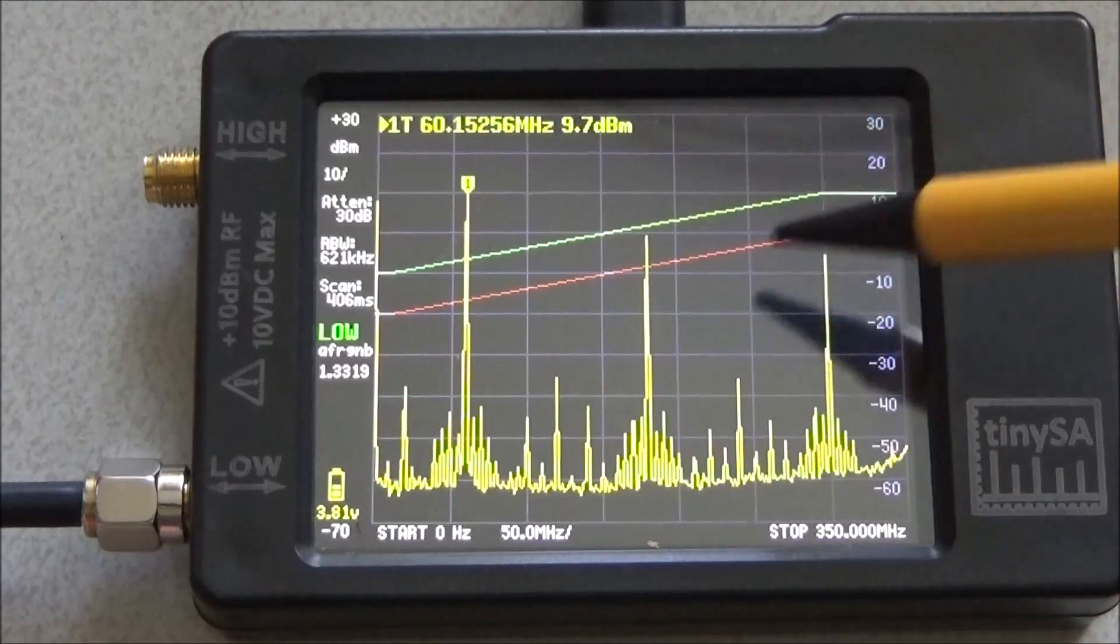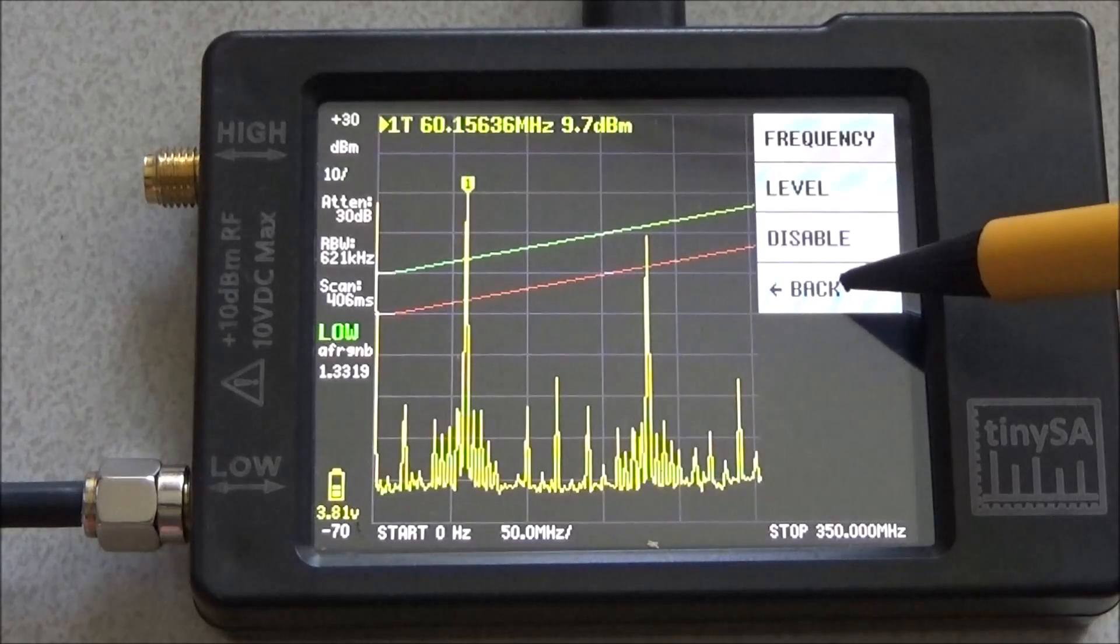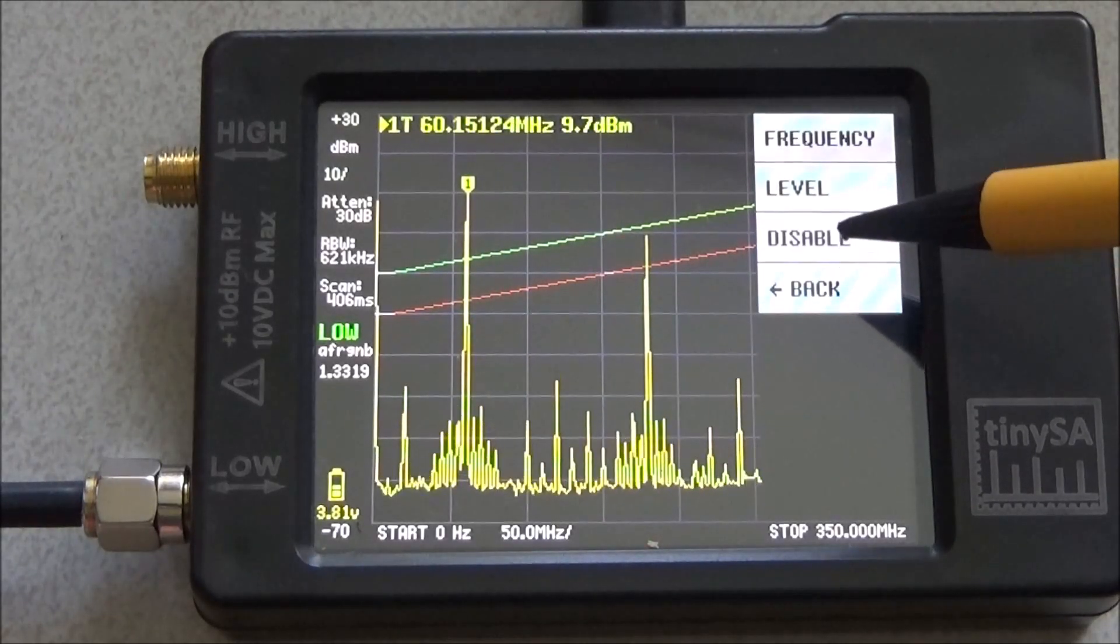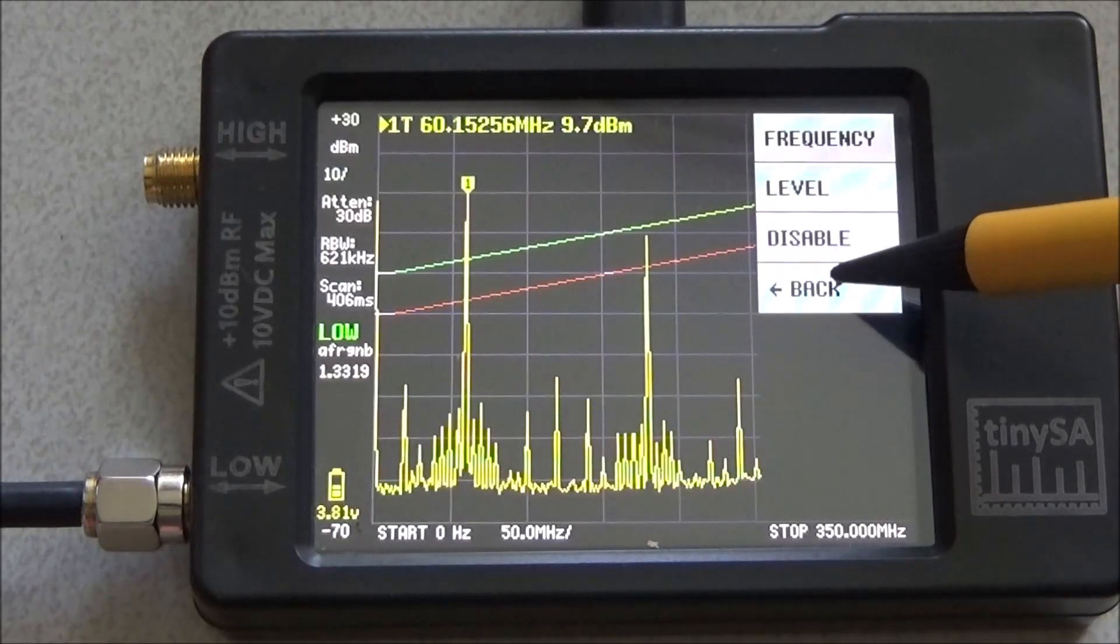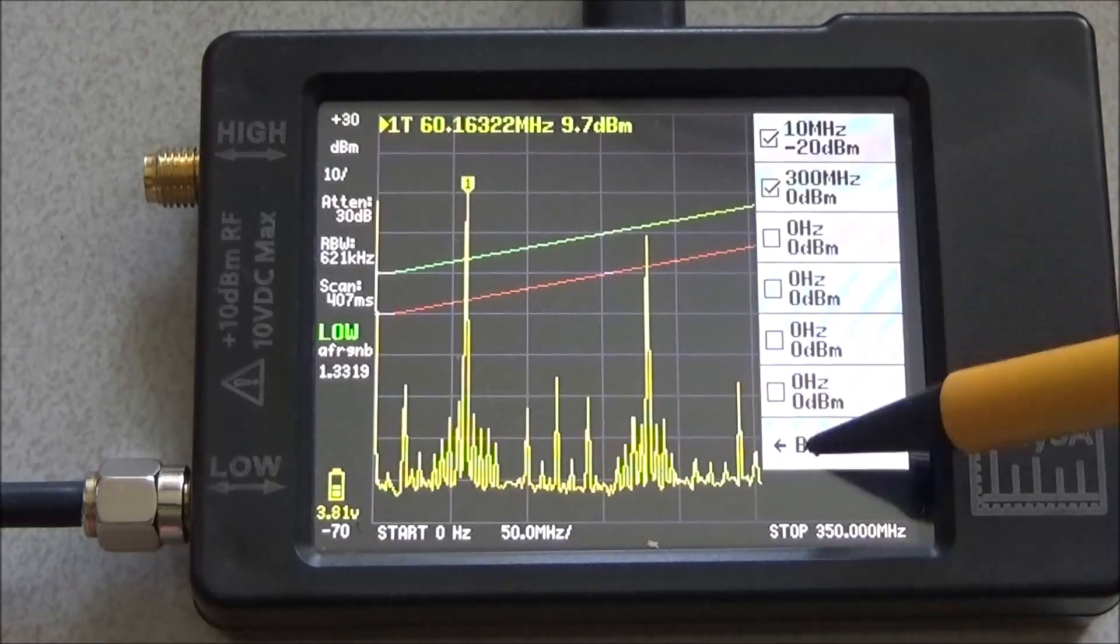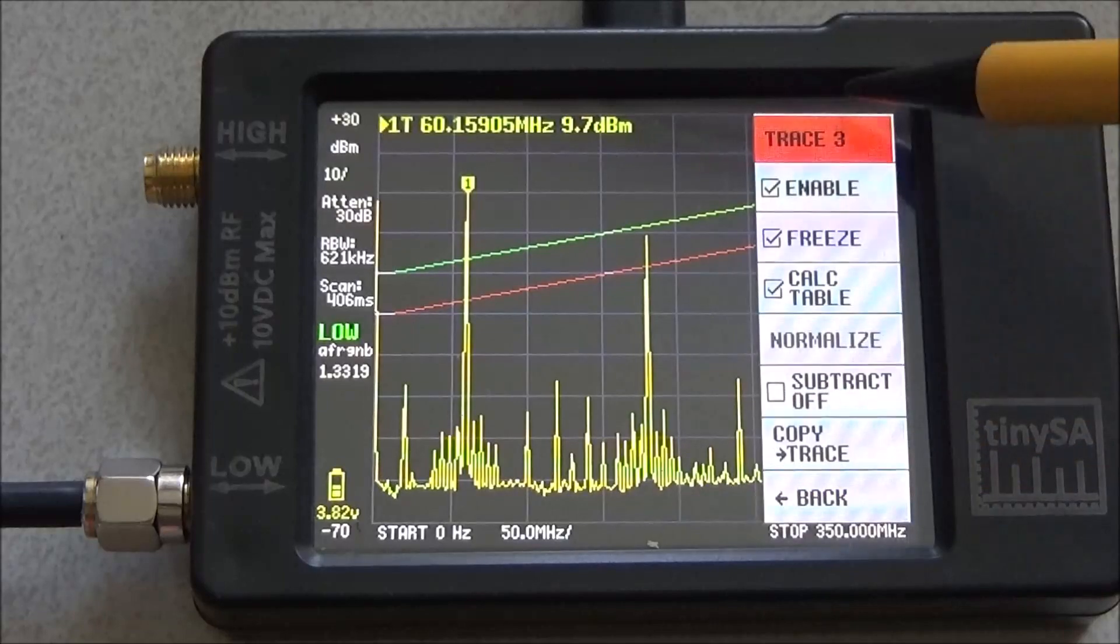Another option for the table is that you use it as a compensation table to compensate for a frequency dependent gain, for instance of an amplifier during your measurements. For instance you have an amplifier.